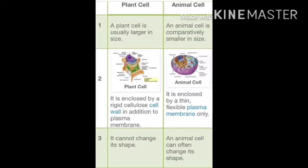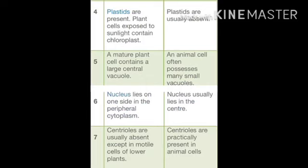Now the difference between animal and plant cells. A plant cell is usually larger in size, whereas an animal cell is comparatively smaller. Plant cells are enclosed by a rigid cellulose cell wall in addition to the plasma membrane; animal cells are enclosed by only a thin flexible plasma membrane. Plant cells cannot change their shape, but animal cells can often change their shape. Plant cells exposed to sunlight contain chloroplast, whereas plastids are usually absent in animal cells. A mature plant cell contains a large central vacuole, but in animal cells it is small or sometimes temporary.